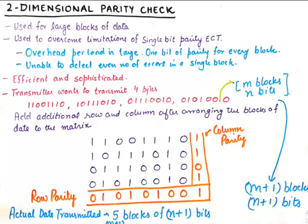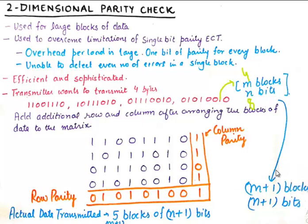Finally, what we will send is: for m blocks — in this case m was 4 — and each block is of 8 bits, the transmission will happen for m+1 blocks and n+1 bits. So if earlier we had 4 blocks, now we will send 5 blocks. And if earlier the block size was 8 bits, now the block size will also become 9 bits. So the simple formula to remember is: for m blocks and n bits, we simply need to transmit m+1 blocks and n+1 bits.